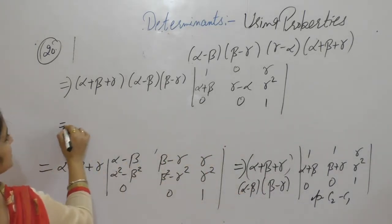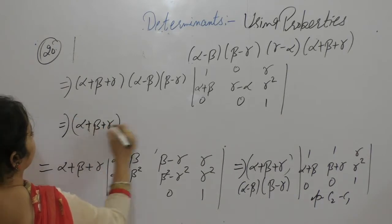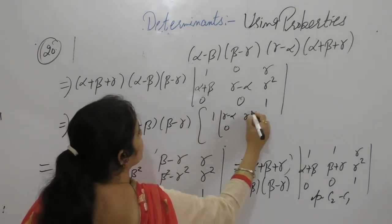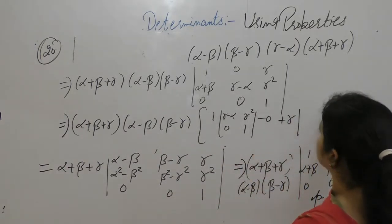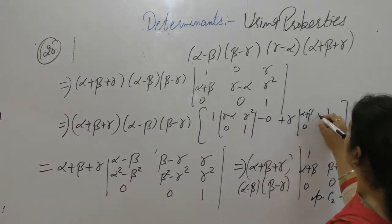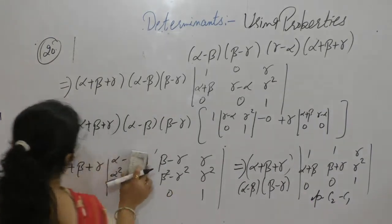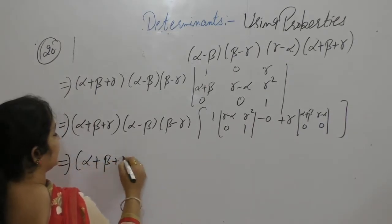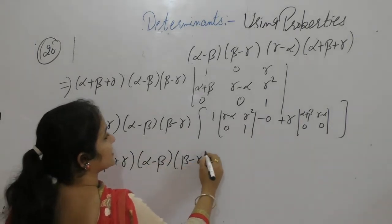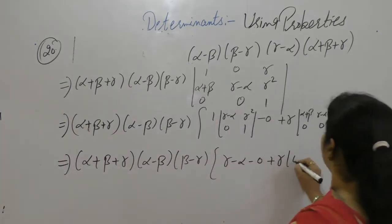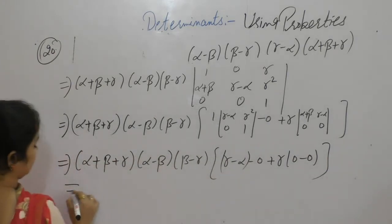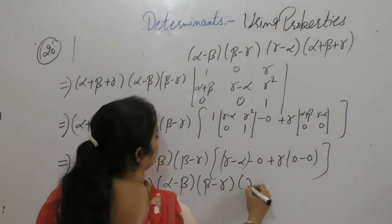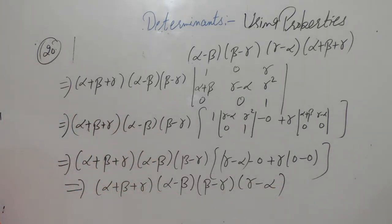Now we can expand along the first row. We get (α minus β)(β minus γ) times: 1 into (γ minus α), with the 2×2 minor from the remaining columns. After expanding and simplifying — noting the off-diagonal terms cancel — we are left with (γ minus α). So the final result is (α plus β plus γ)(α minus β)(β minus γ)(γ minus α). That is proved.